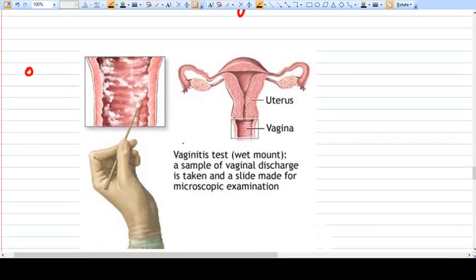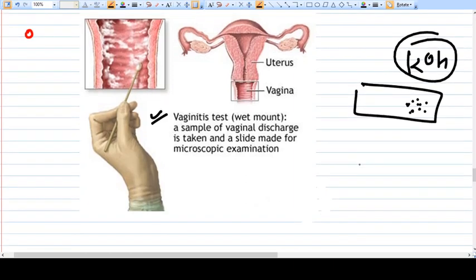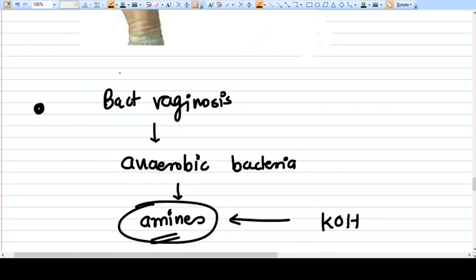What you do in this test: you just take one sample of vaginal discharge and make a slide of the discharge. Then you just pour KOH on it.